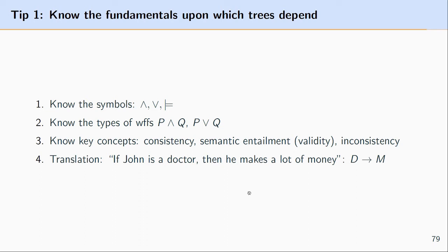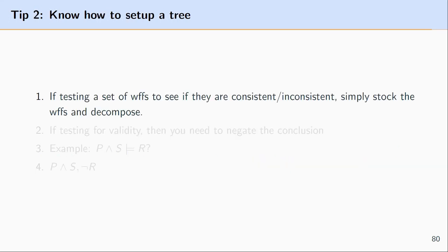And finally it's helpful especially if you're translating arguments from English to the language of propositional logic and then using trees to test that propositional logic argument you want to have an understanding of how to translate an English sentence into the language of propositional logic. So if you have a sentence like if John is a doctor then he makes a lot of money you want to know that oh I see this if then construction right here so I should translate it as a conditional because this captures the truth conditions of the English sentence. Let's take a look at tip two now.